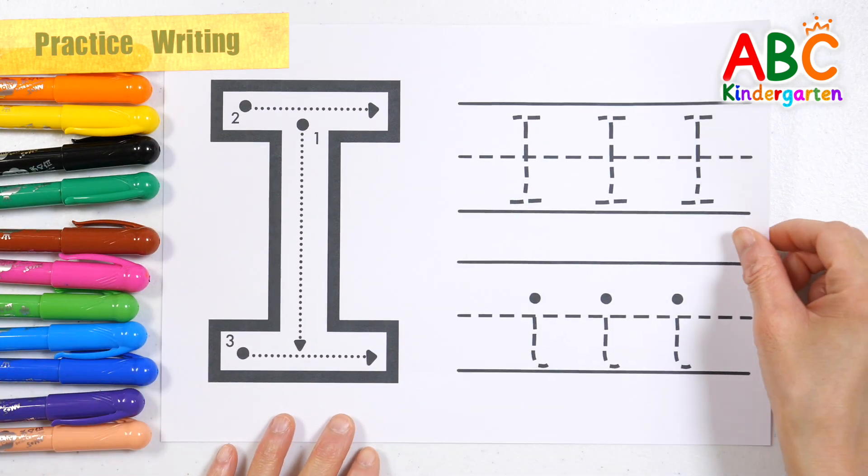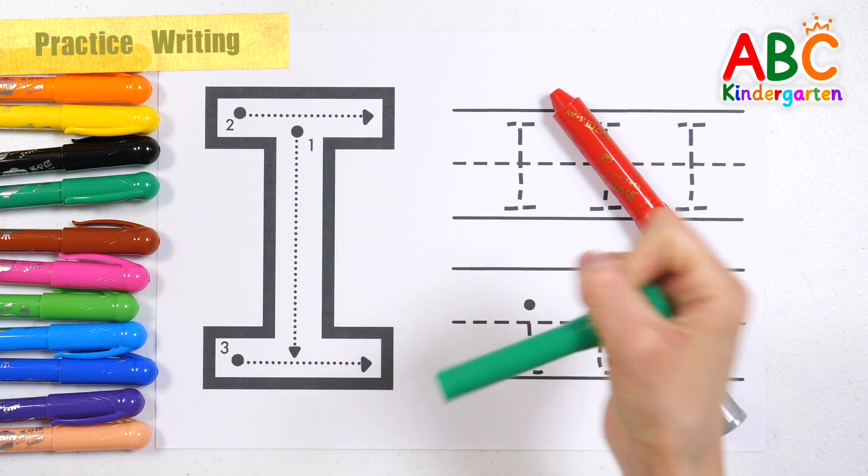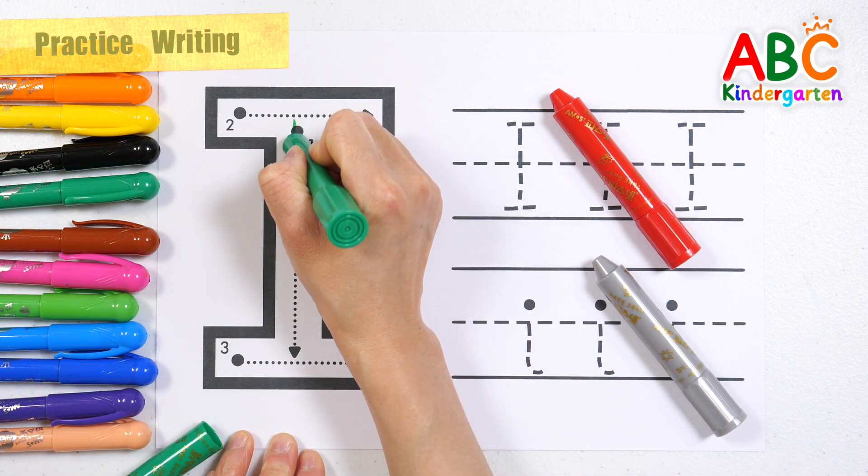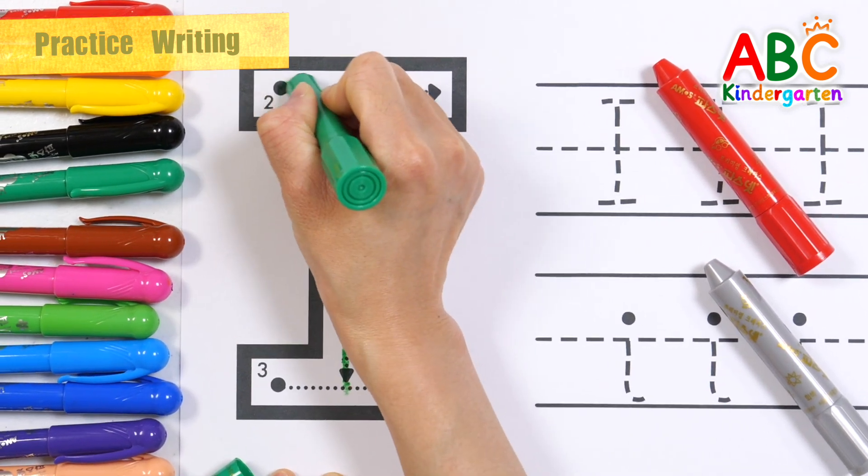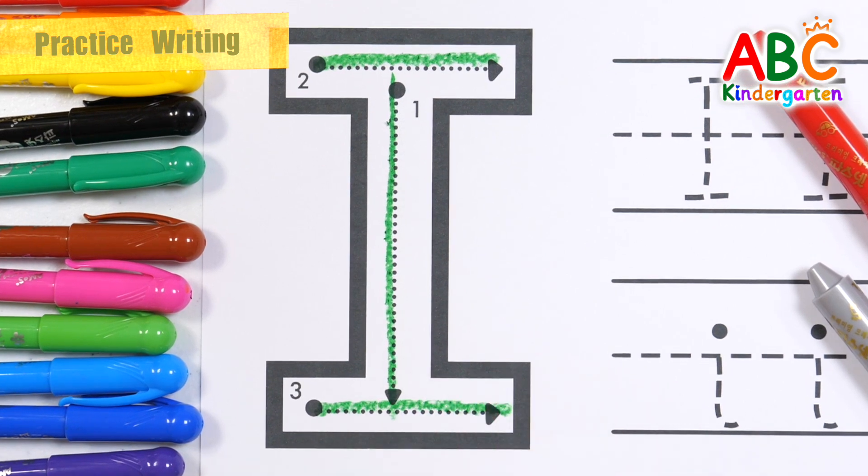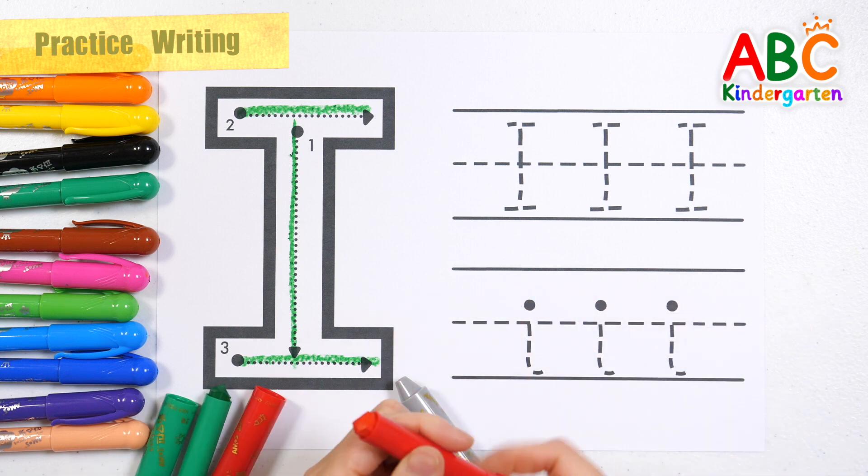Let's learn how to write the alphabet I. Shall we slowly write the letters in numerical order with green crayon? Alphabet I? Let's practice writing again with red and gray crayons.